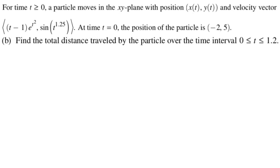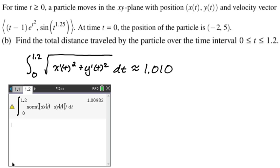Find the total distance traveled by the particle on the time interval from 0 to 1.2. All right, so that's going to be the integral of the speed from 0 to 1.2. So that's the integral of the magnitude of the velocity vector. So this time we don't plug in the 1.2. I think maybe they're trying to trip you up on that. We just let the calculator do the work. I get approximately 1.010.